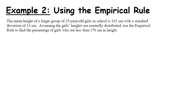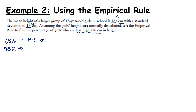Let's look at the first example, an Ordinary Level mock. The mean height of a large group of 15-year-old girls in a school is 163 centimeters — that's mu — and the standard deviation is 13 — that's sigma. Assuming the girls' heights are normally distributed, use the empirical rule to find the percentage of girls who are less than 176 centimeters.